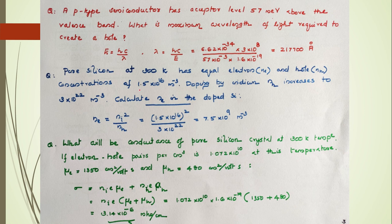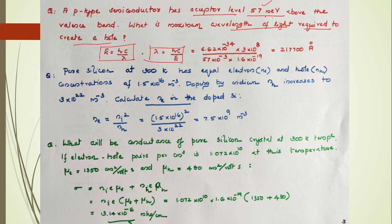Problem 1: A p-type semiconductor has an acceptor level 57 milli-electron volts above the valence band. What is the maximum wavelength of light required to create a hole? Using E = hc/λ, we get λ = hc/E. Converting 57 meV to joules by multiplying by 1.6×10⁻¹⁹, and substituting h = 6.62×10⁻³⁴ and c = 3×10⁸, we calculate the answer.